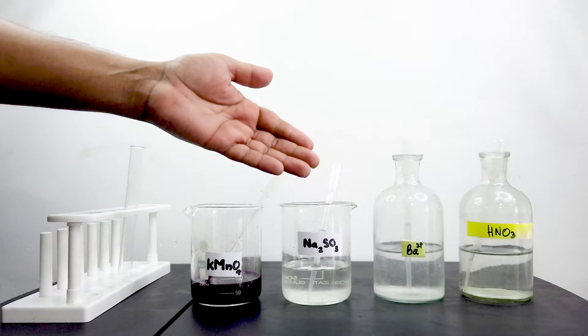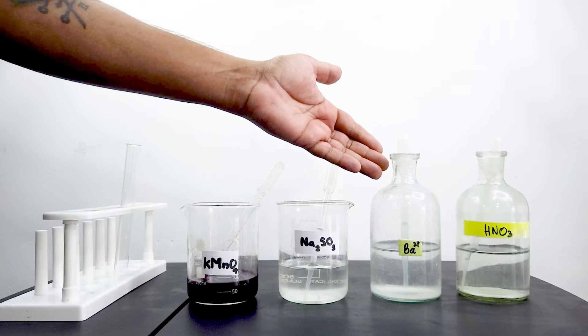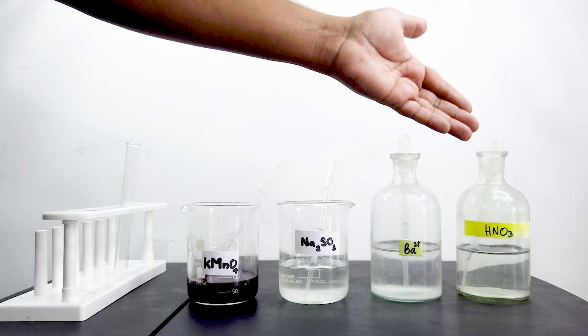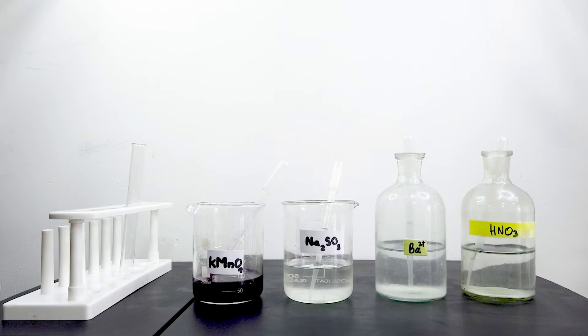Today we are going to test sulfide ions. We will use barium ion solution, nitric acid, and potassium permanganate solution.